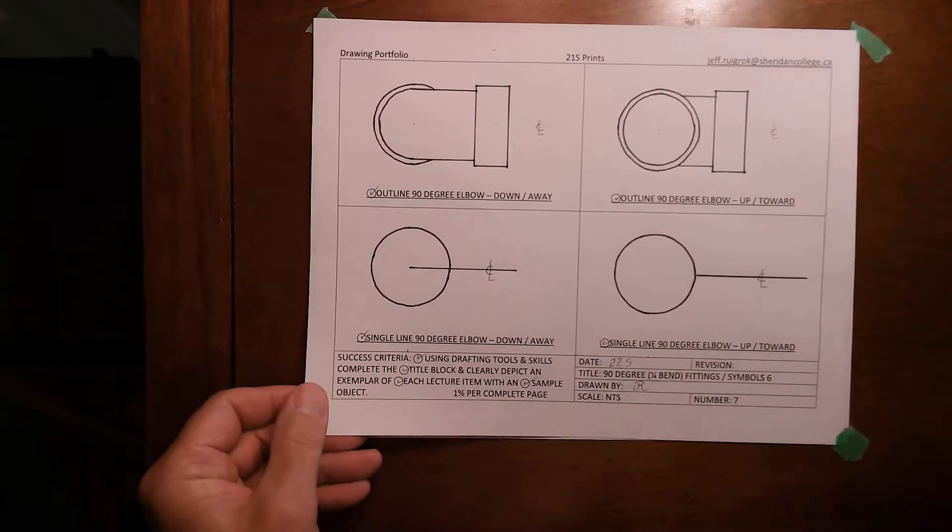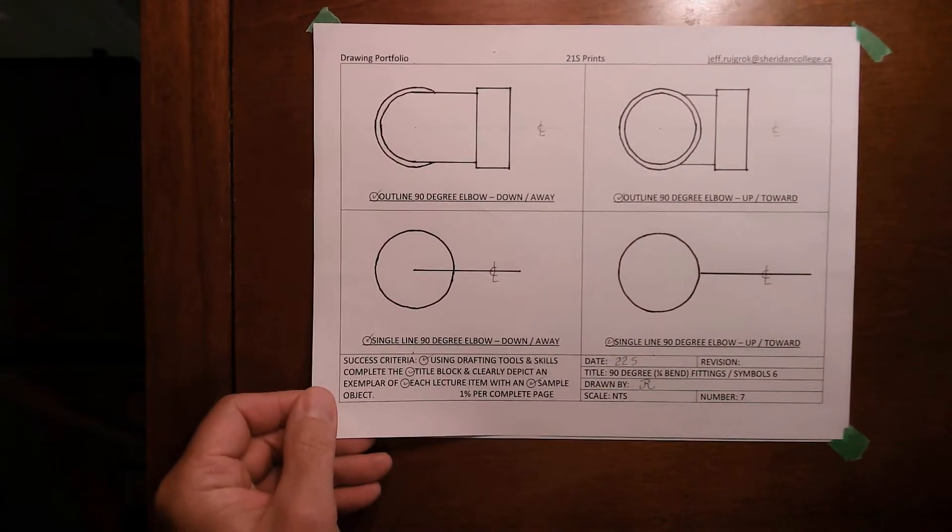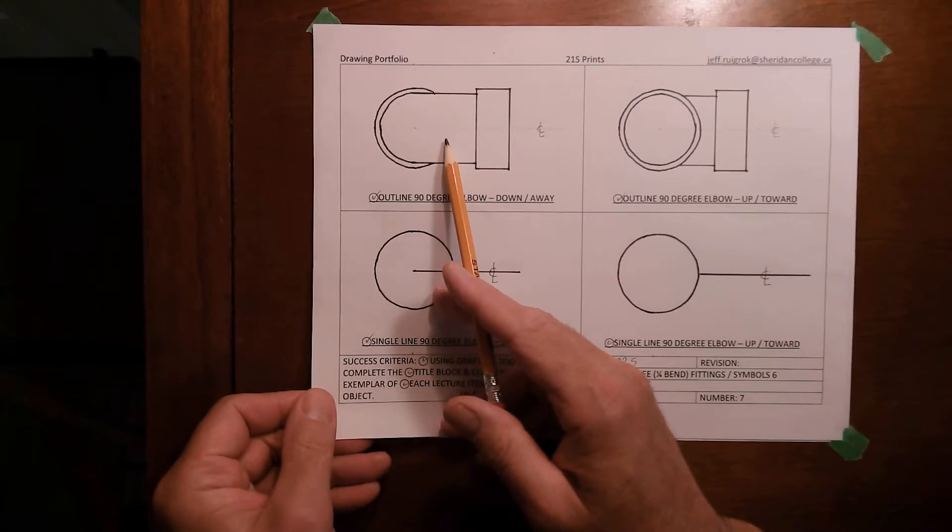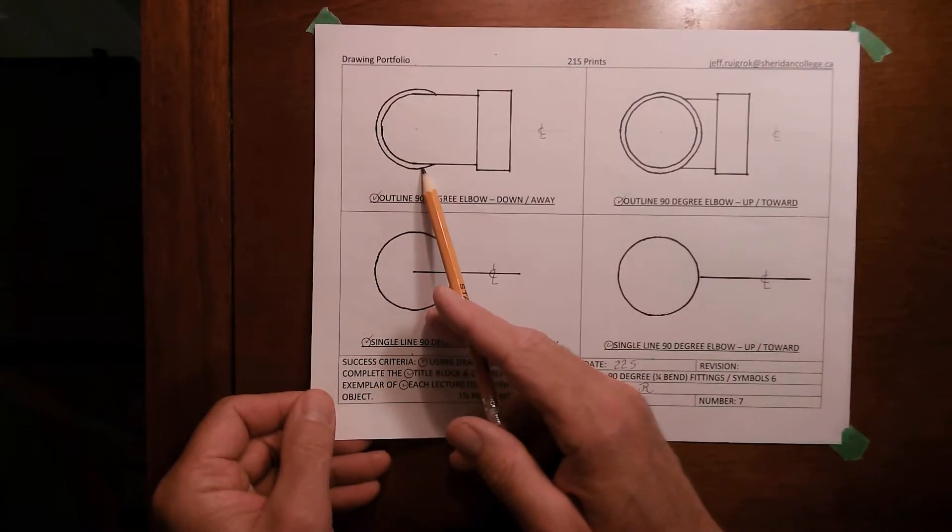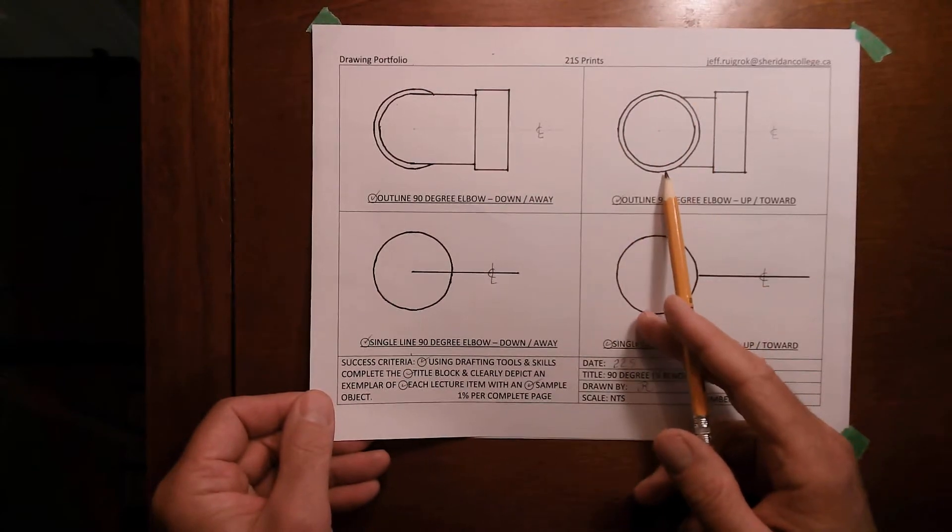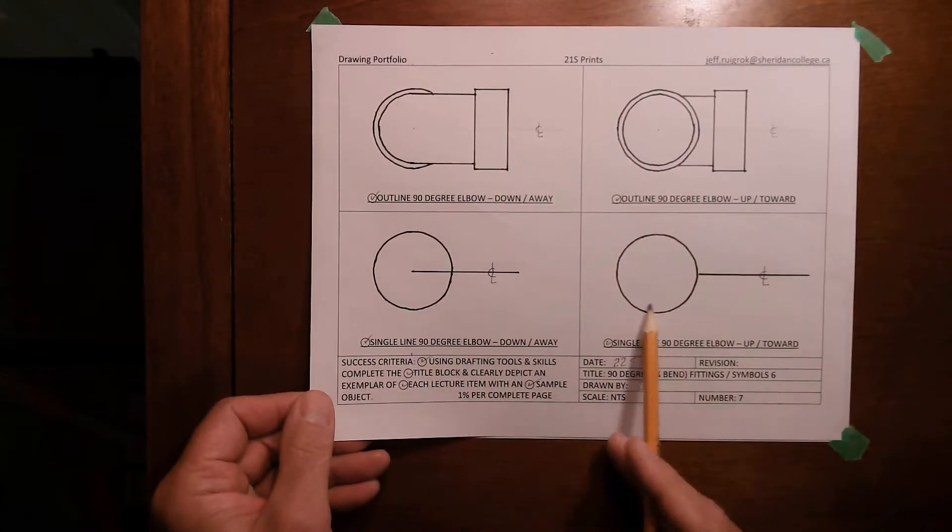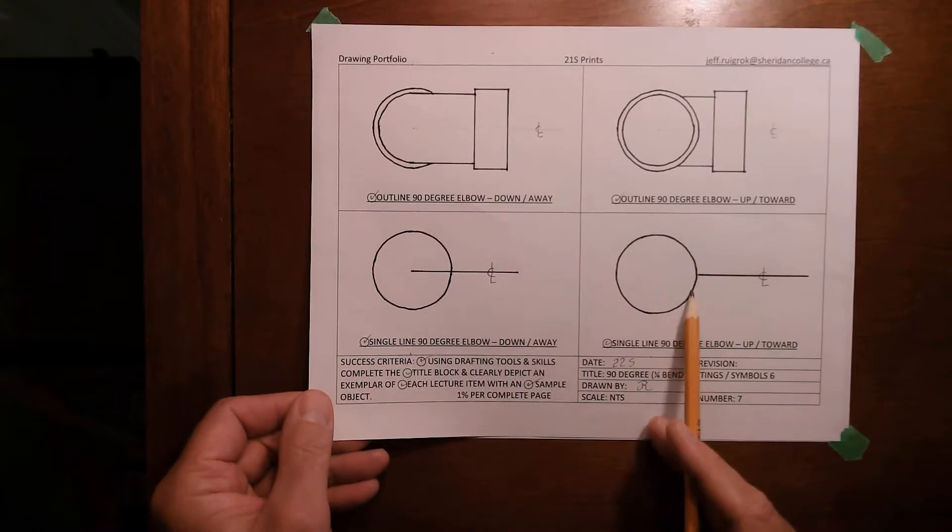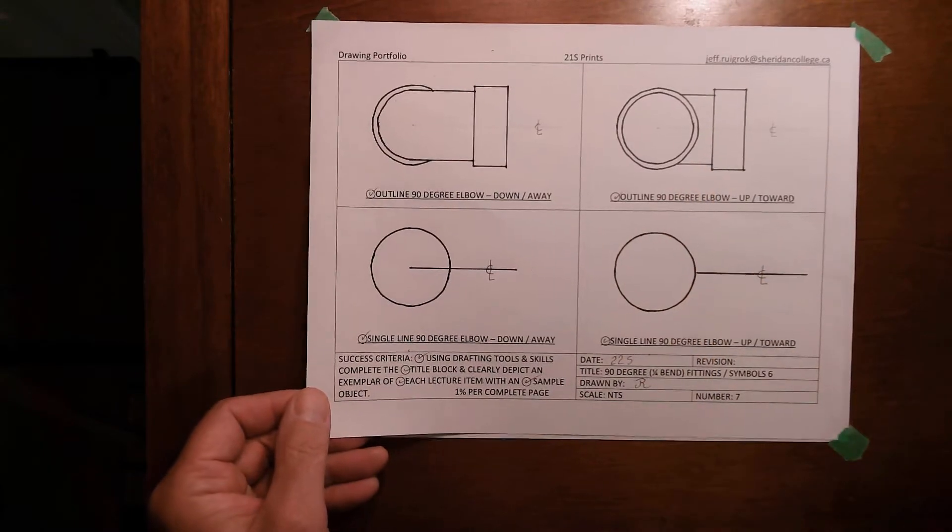The 90 degree elbows, this is what they finished up looking like. So again, this is the back of the elbow where you can see the other socket but it's in the background. This is looking right into the socket of an elbow and then the symbols that go with that.